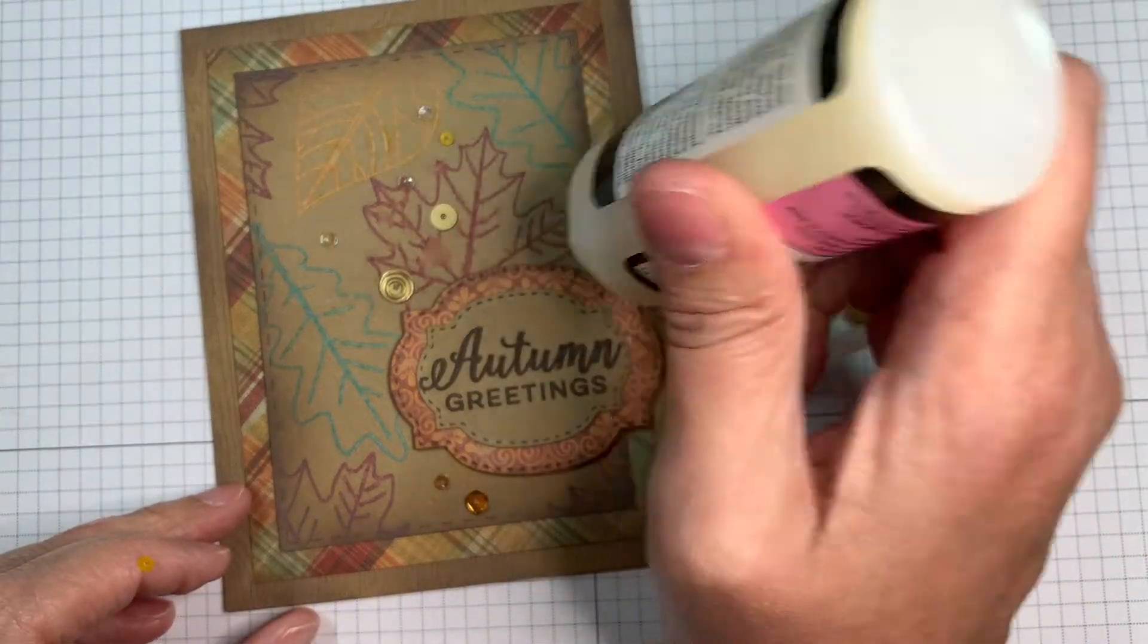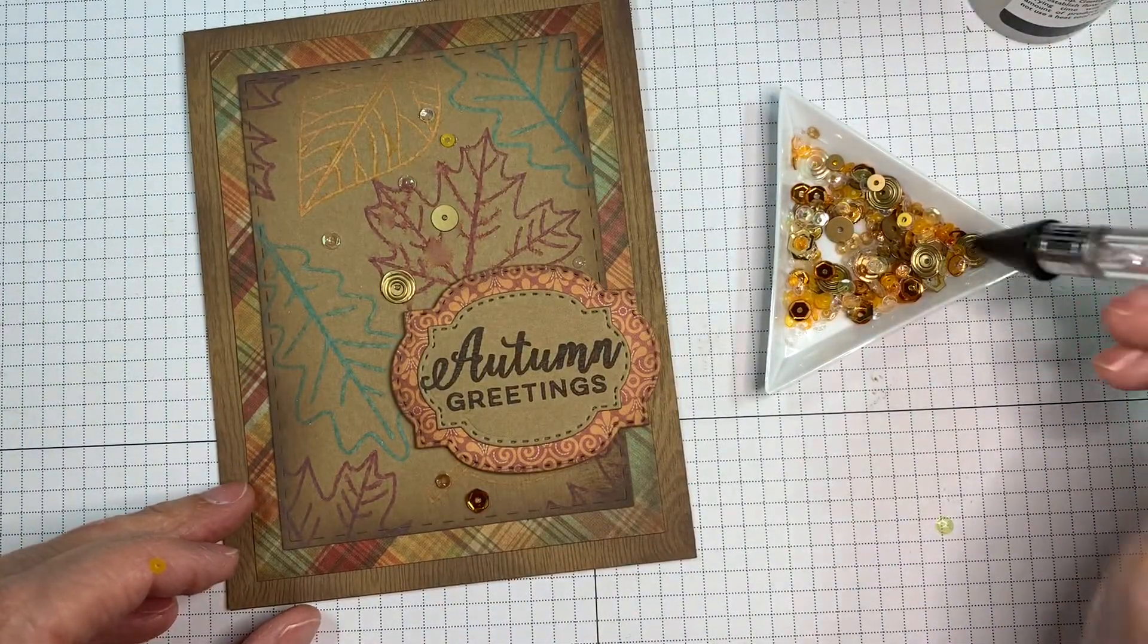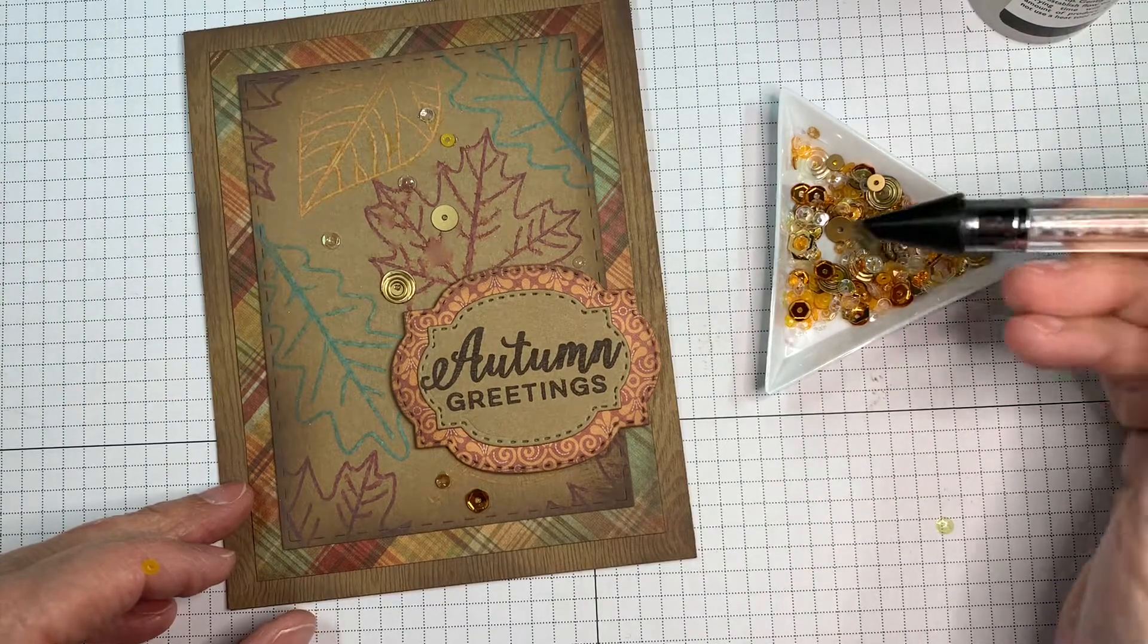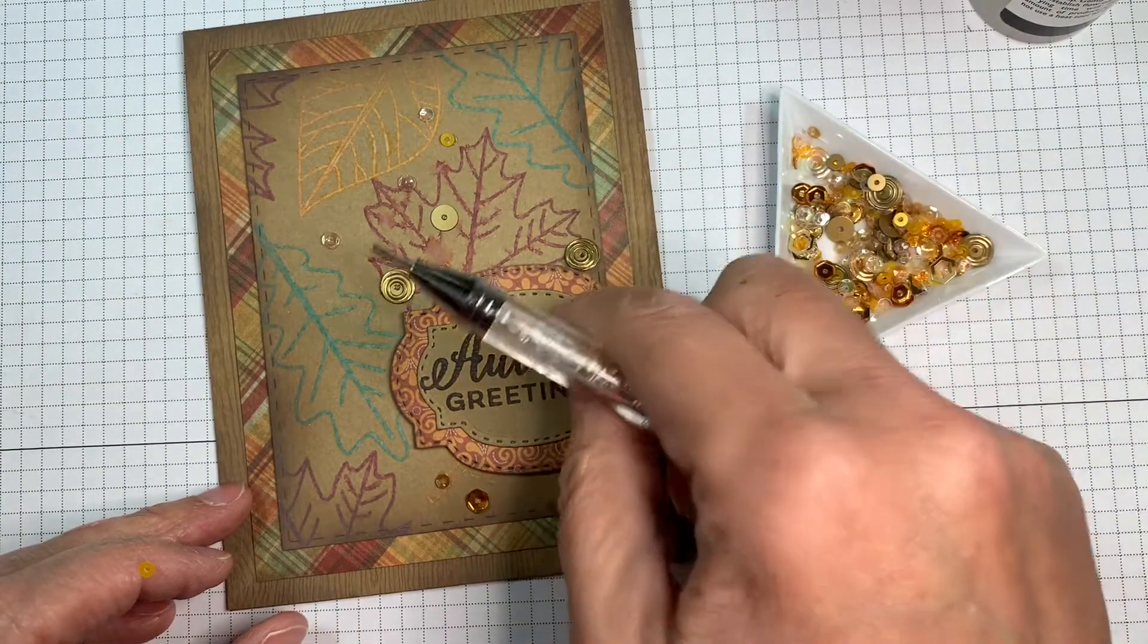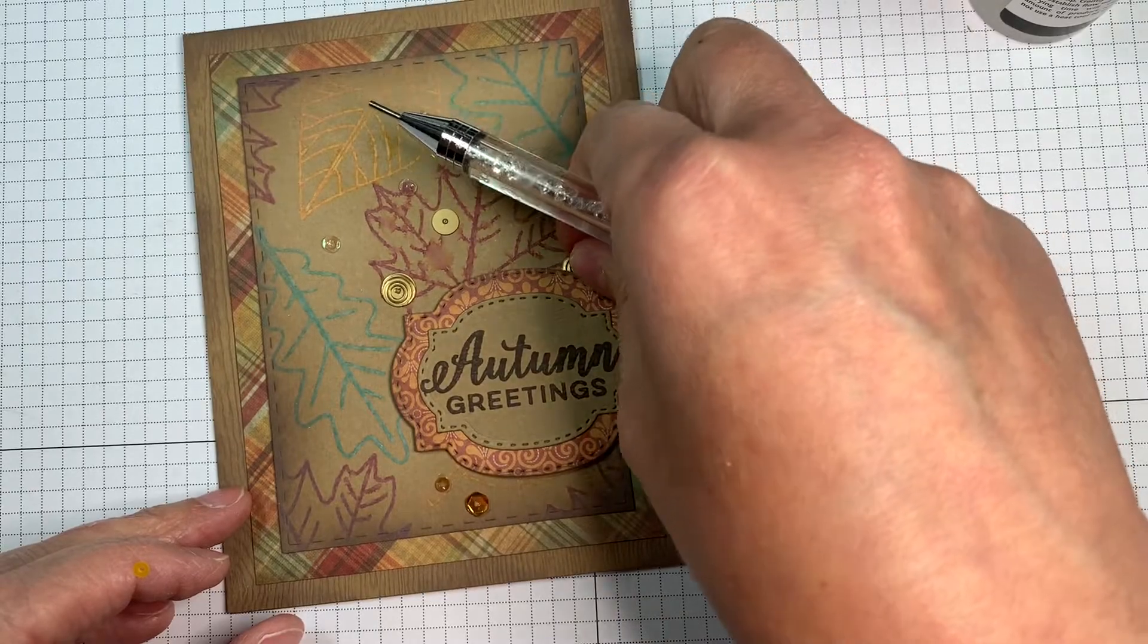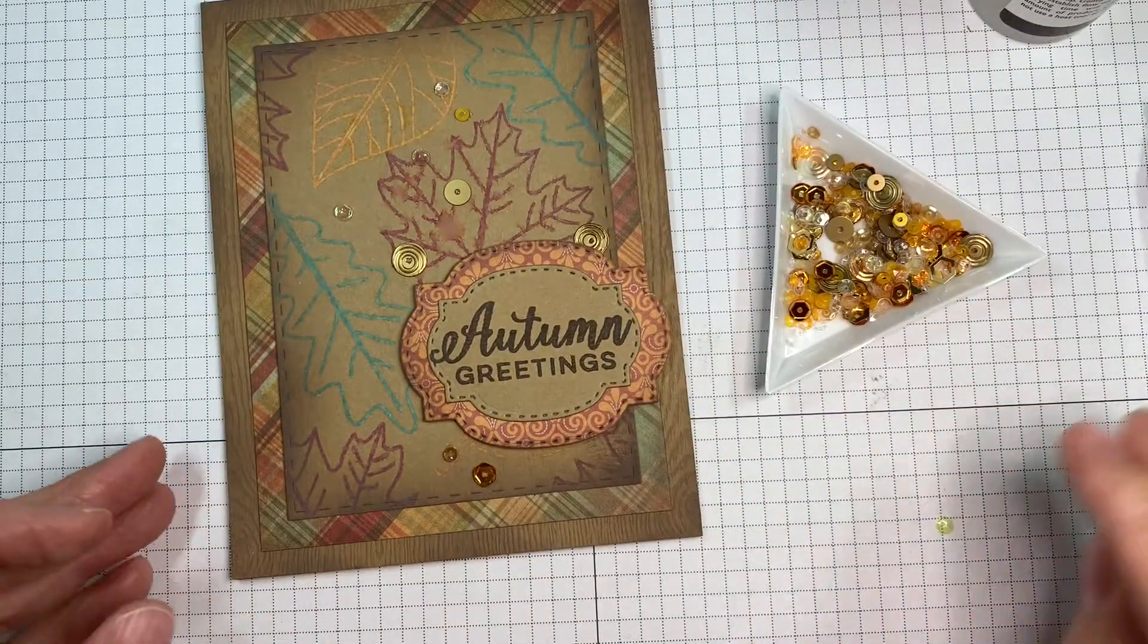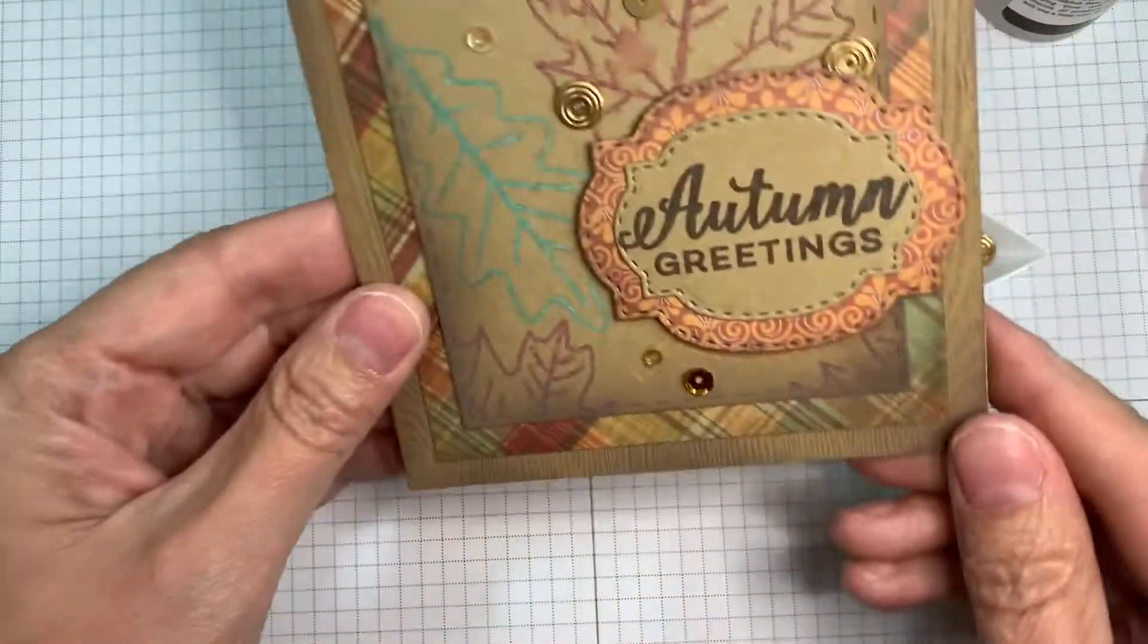You've got some pretty golds and honey colors and stuff like that. I've got to add another one. You always got to hide one kind of behind your front image or your front sentiment. It always looks kind of neat to have one sticking out from behind, especially if you have layers.